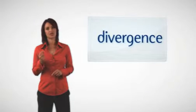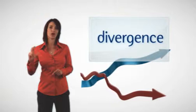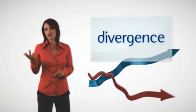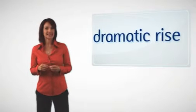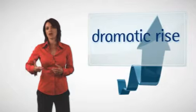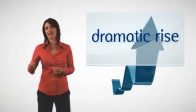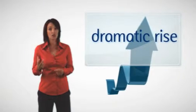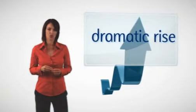Divergence is used to describe the price of the instrument moving away from the MACD. It signals the end of the current trend. The dramatic rise is when the MACD rises dramatically, that is the shorter moving average pulls away from the longer term moving average, and it's a signal that the security is overbought and will soon return to normal levels.